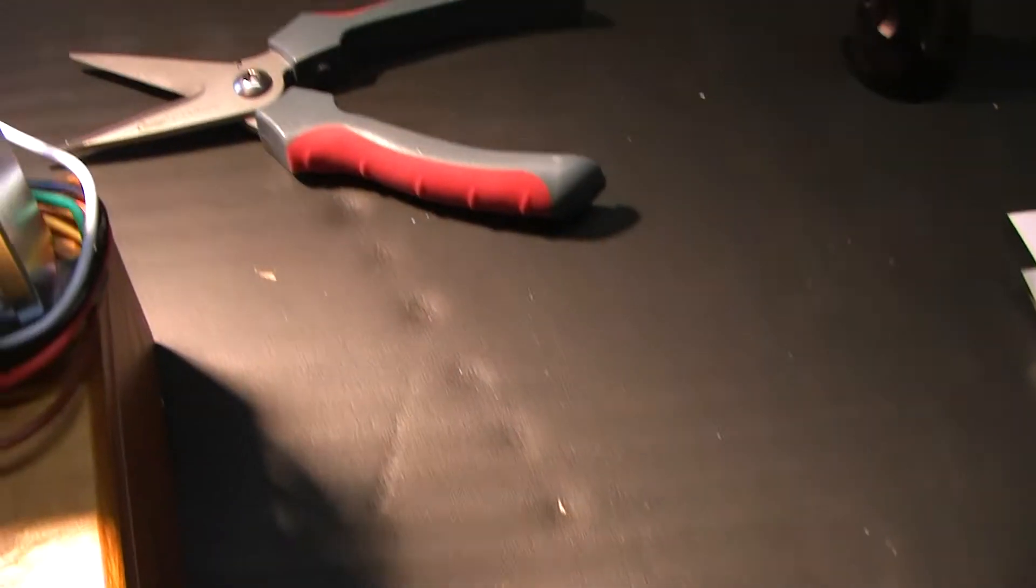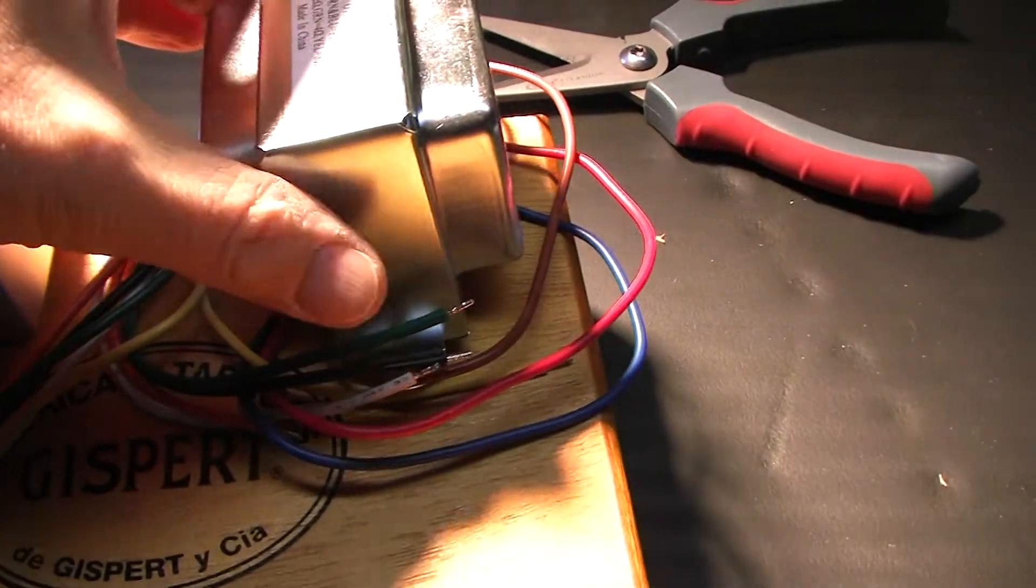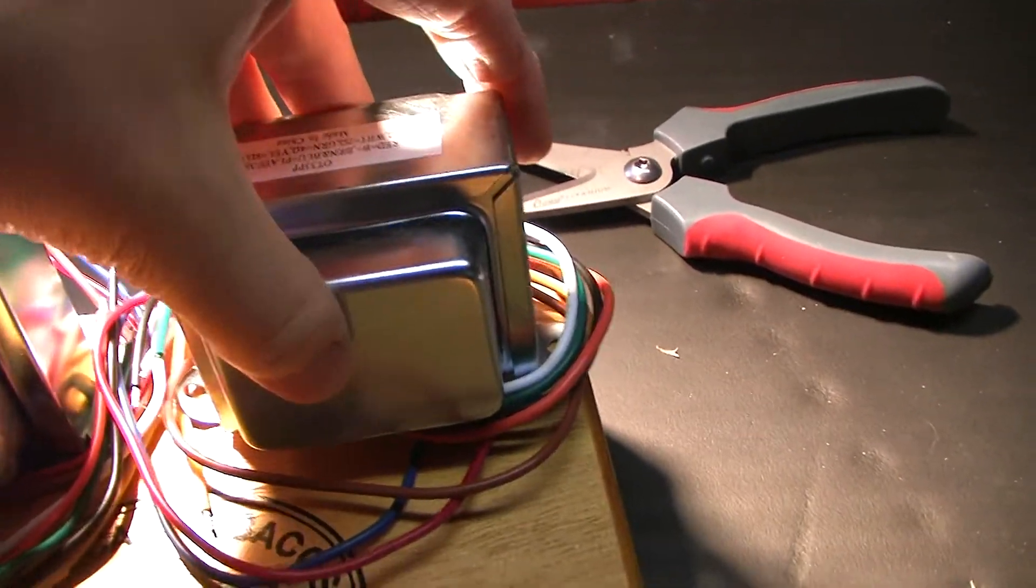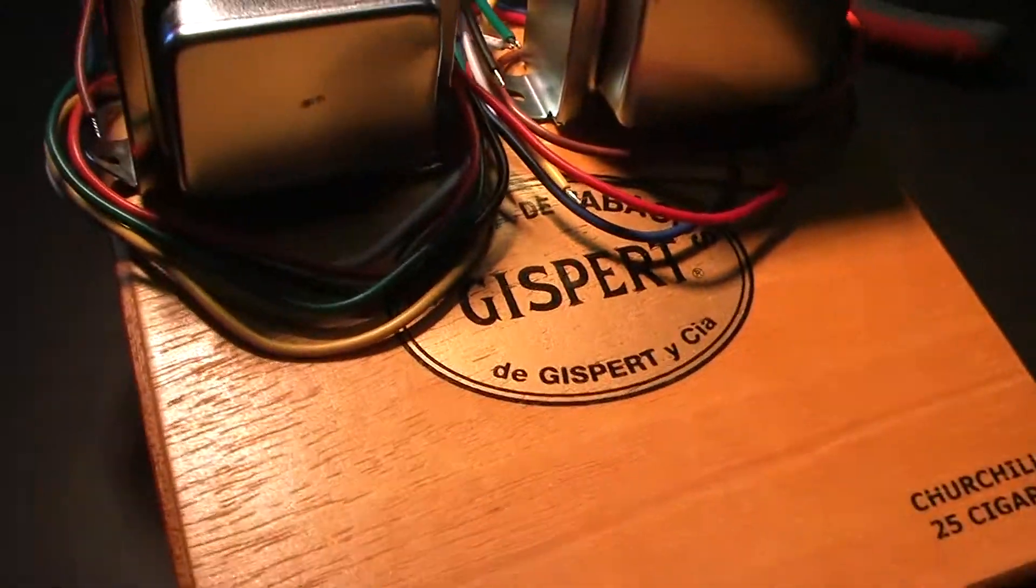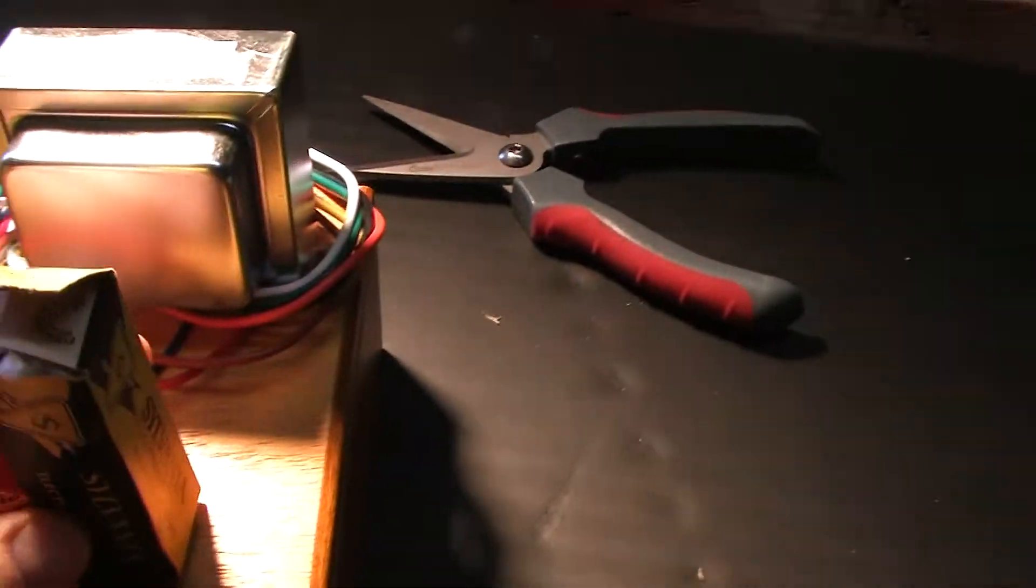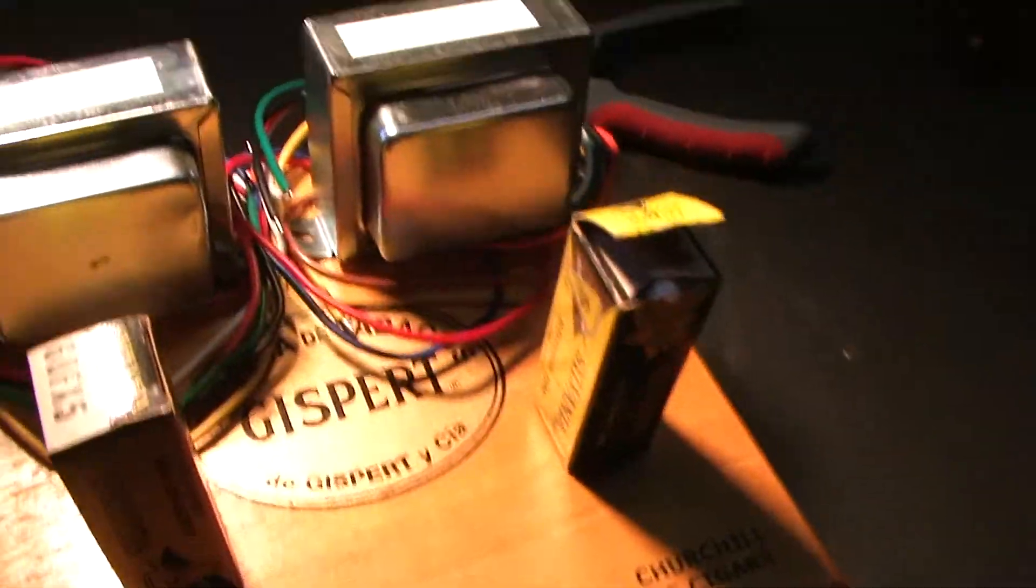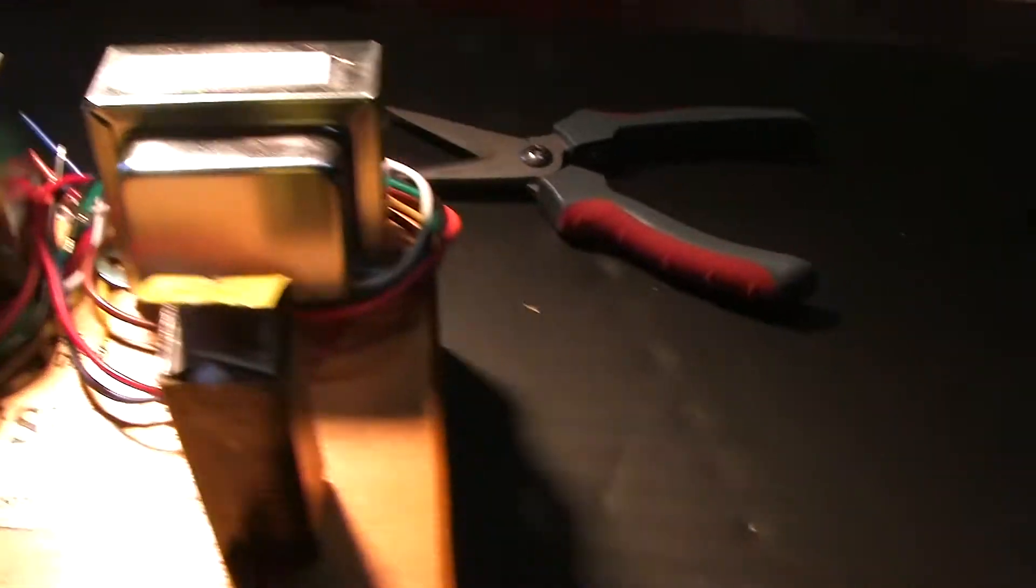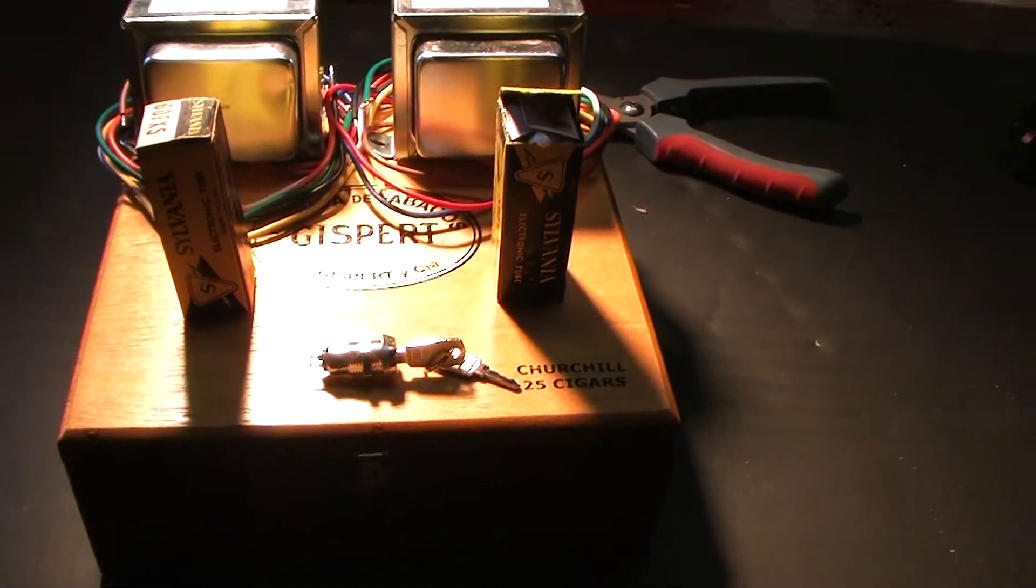Let me grab the transformers. So the transformers will be there and probably the tubes. Those are the output transformers, remember there is no power transformer. So probably the tubes there and maybe the switch on top. I think it's kind of cool to have a switch on top.